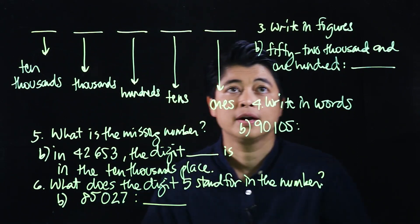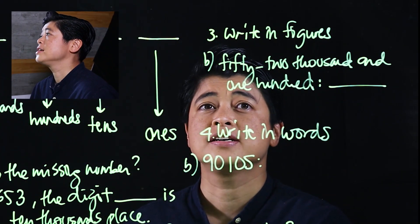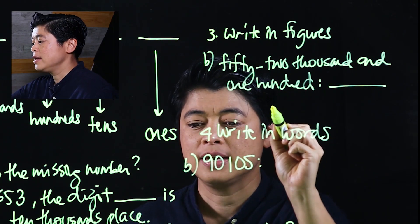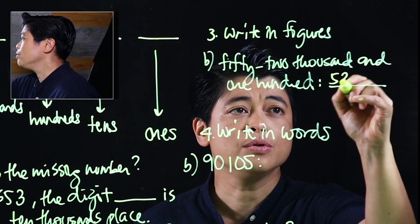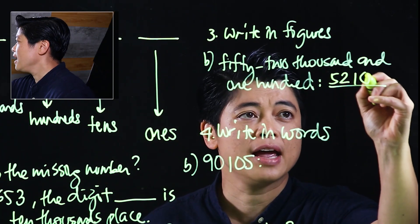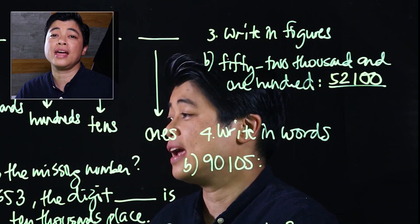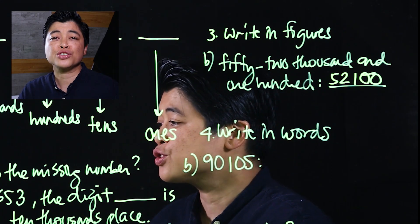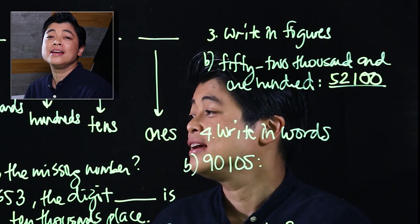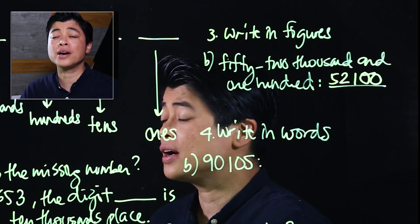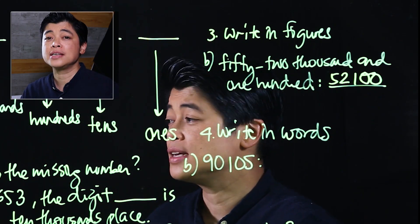In these numbers, we start with number 3. It says write in figures: 52 thousand and 100, which is 52,100. In Singapore math, they really use the word 'and,' so we have to make sure to continue using that in these lessons.